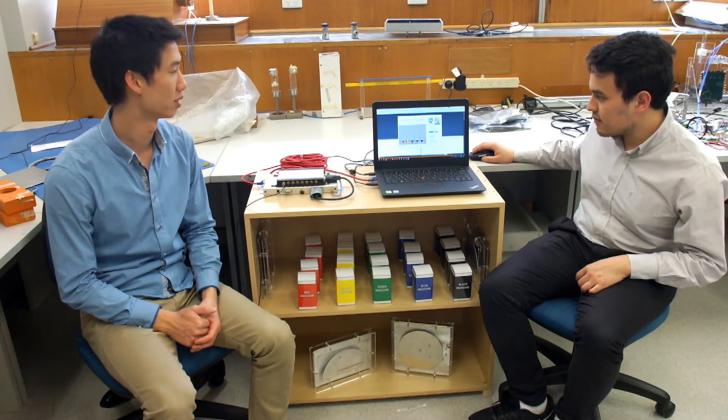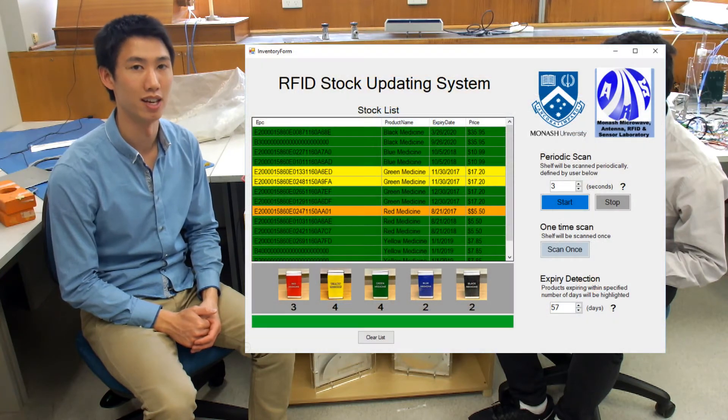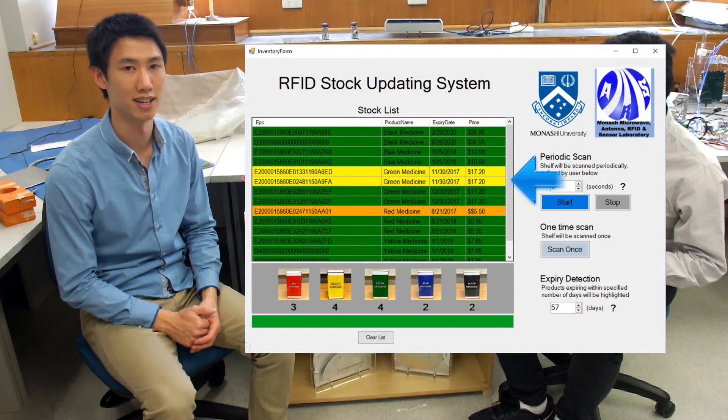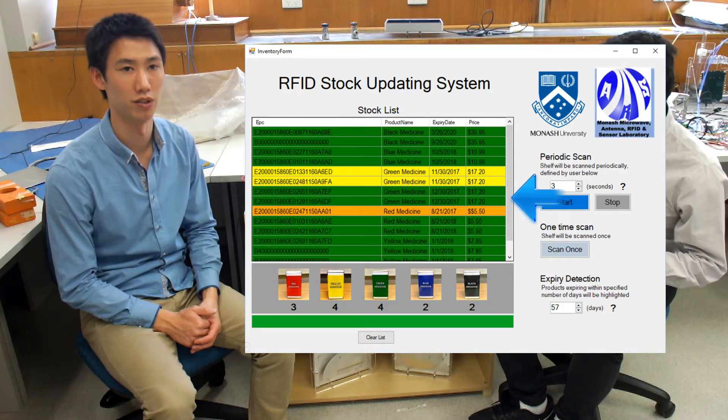This means that expired products will be highlighted in orange. Items expiring within 60 days will be highlighted yellow, while the rest of the stock will be green.